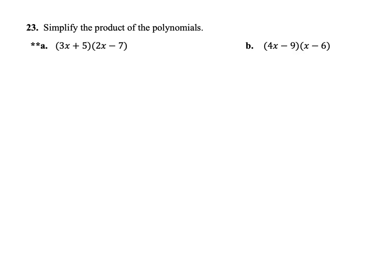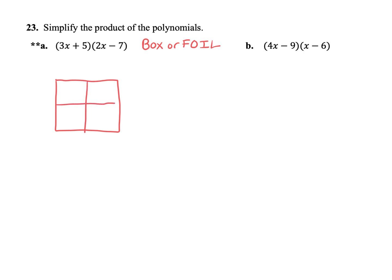In this next problem, we cannot use the distributive property because we have a binomial times a binomial — we have two things with two terms. You have two options: you can either do the box method or the foil method. In class, most students seem to prefer the box, so I'm going to start with that method. For the box method, you just make a square and divide it into fours. Then we're going to put one binomial on the top of the box — I'm going to do the 3x plus 5 on top. And then on the side of the box, I'm going to put the 2x and the minus 7. Make sure you carry the signs with the numbers, so that's a 2x minus 7.